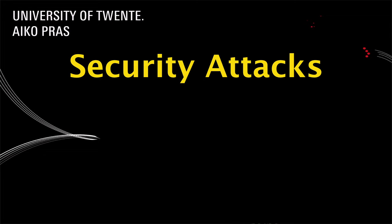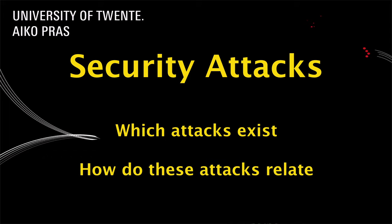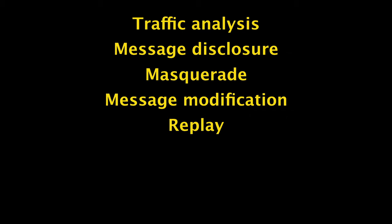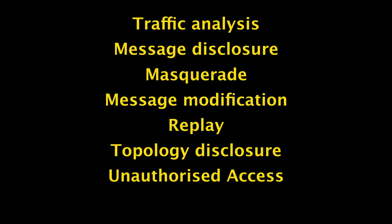In this video we introduce the various kinds of security attacks we see on the internet. We will identify which attacks exist and how these attacks relate, particularly explaining the relationship between traffic analysis, message disclosure, masquerade, message modification, replay, topology disclosure, unauthorized access, and denial of service. Note that this video just identifies and relates these attacks, and we have a series of separate videos discussing each attack in detail.